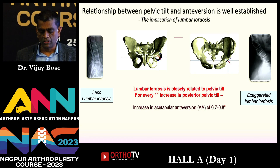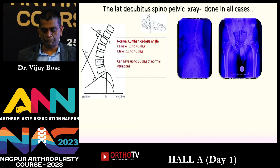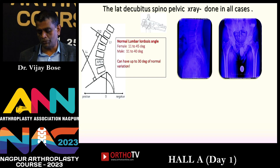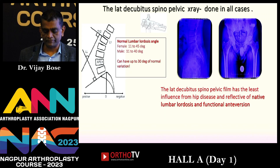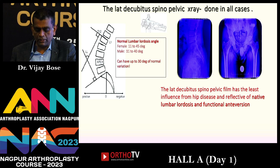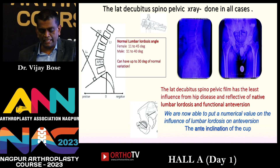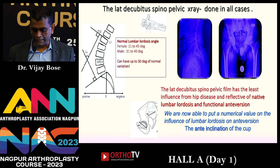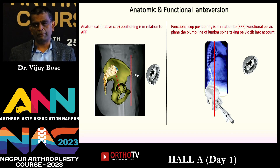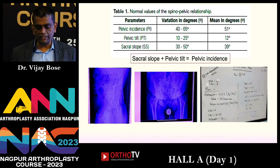The lateral decubitus spinopelvic X-ray is done in all cases, and based on its values we adjust native version to achieve the desired functional position. This film has the least influence from hip disease and reflects native lumbar lordosis. We've also named the inclination measured on the lateral X-ray as the anti-inclination of the cup. The functional pelvic plane is a far better landmark than the APP for socket placement.